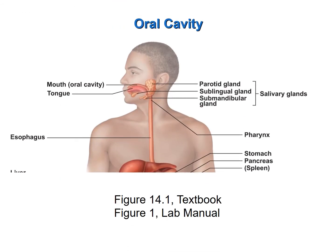This figure shows the salivary glands. There are three that you need to be able to identify. The parotid salivary glands are anterior and a little inferior to the external acoustic meatus of the ear. The sublingual salivary glands are under the tongue — lingual refers to tongue, sub is below. And below the mandible you have the submandibular salivary glands. The names are very descriptive.